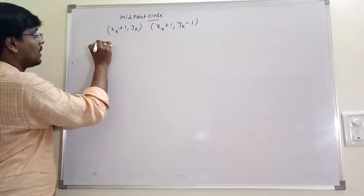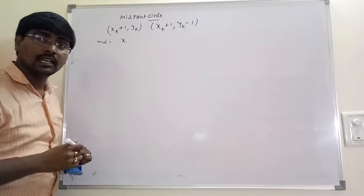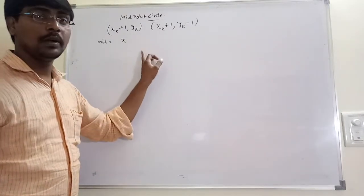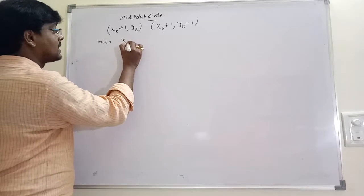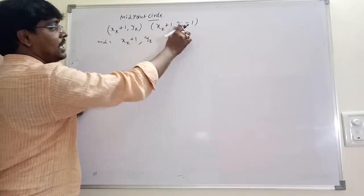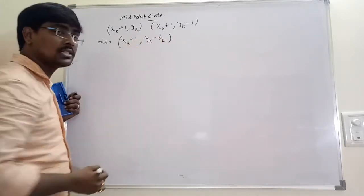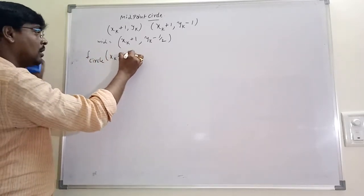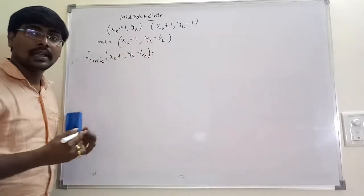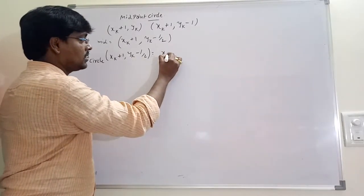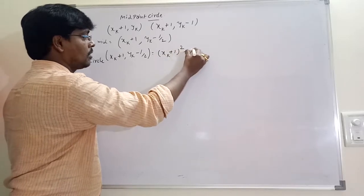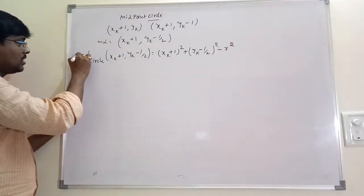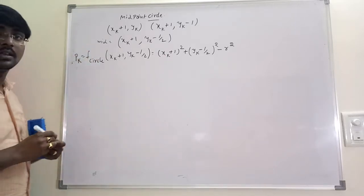This is the midpoint circle algorithm. We calculate the midpoint between the two candidate points. The midpoint is (xk+1, yk - 1/2). The circle function at this midpoint is: f_circle(xk+1, yk - 1/2) = (xk+1)² + (yk - 1/2)² - r². This expression is considered as the initial decision parameter pk.